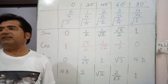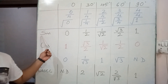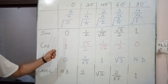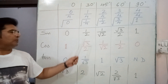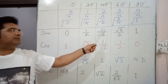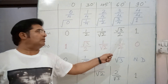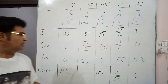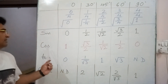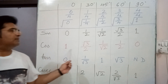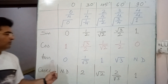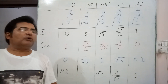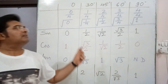For cosec, sec, and cot: cosec is the reciprocal of sin, so take reciprocals of the sine values. Reciprocal of 0 is not defined, reciprocal of 1/2 is 2, reciprocal of 1/√2 is √2, reciprocal of √3/2 is 2/√3, and reciprocal of 1 is 1. Similarly, take reciprocals of cosine values for sec, and reciprocals of tan values for cot.